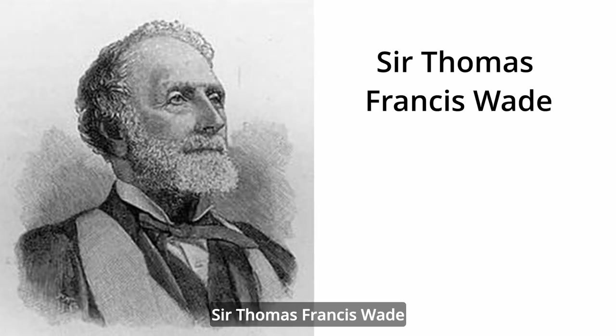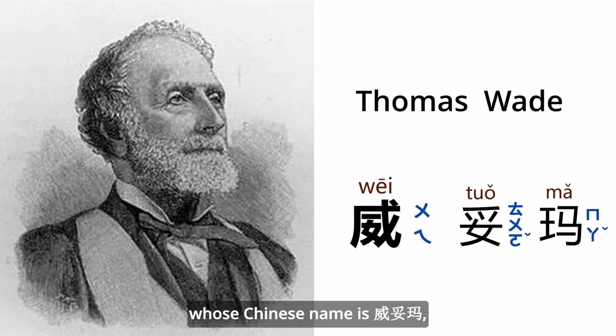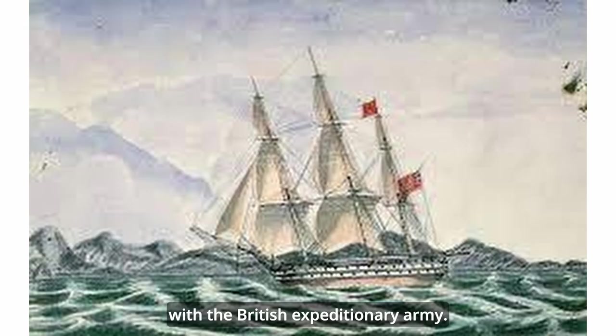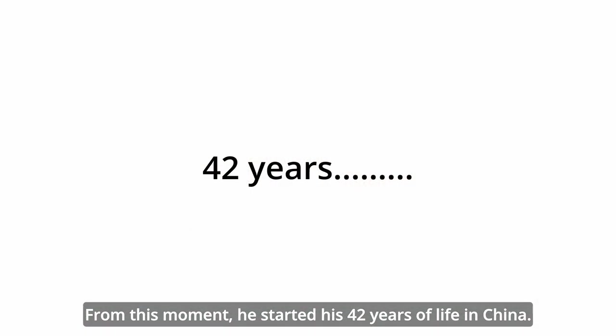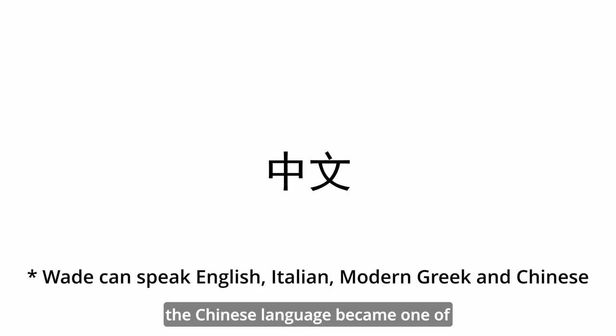Today's story begins with this Englishman, Sir Thomas Francis Wade, whose Chinese name is Wei Tuo Ma. In 1842, he arrived in this distant Asian country with the British Expeditionary Army. From this moment, he started his 32 years of life in China. As a diplomat and sinologist, the Chinese language became one of the most familiar languages to him.